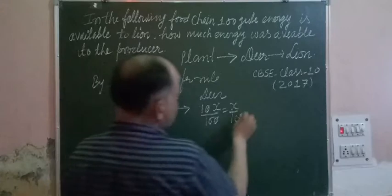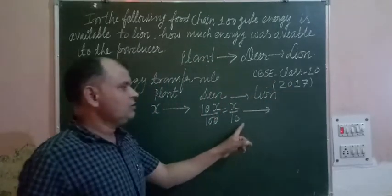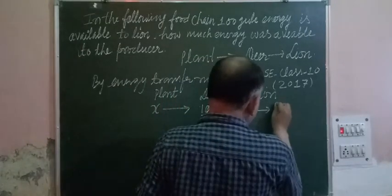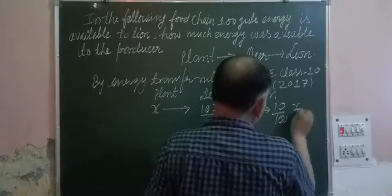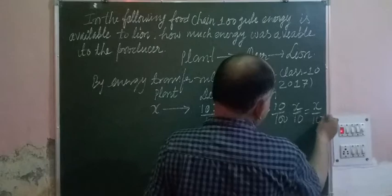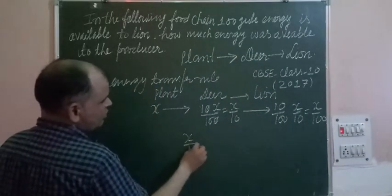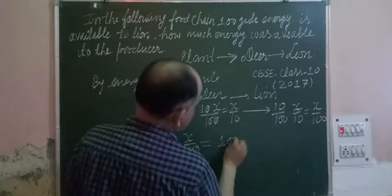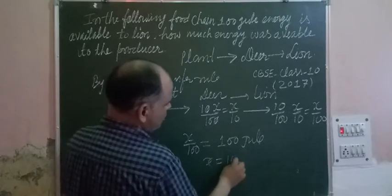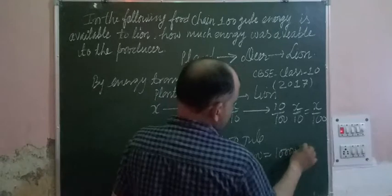Now this energy transfers to lion, which is 10% of X over 10. So 10 upon 100 of X over 10 gives us X over 100. And this is given to us: X upon 100 equals 100 joule. Therefore, X equals 100 times 100 equals 10,000 joule.